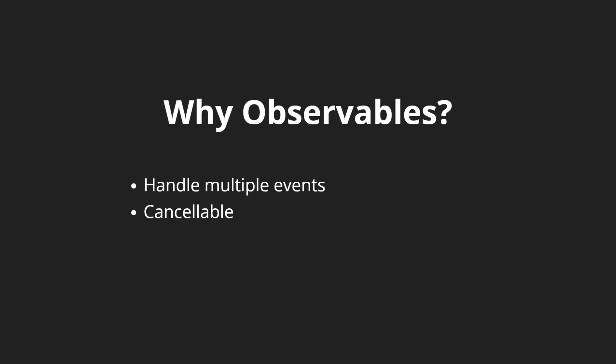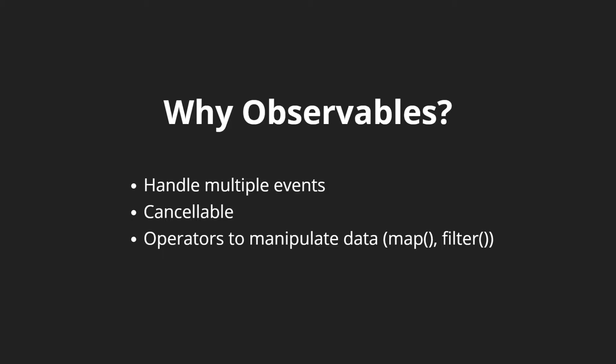A really cool thing about observables is that we have operators to manipulate the data. We can treat asynchronous data like collections — we can map, we can filter, and we'll use map extensively in our application. Another really cool thing is that if an observable makes a call and it doesn't go through, we can tell it to retry that call maybe three or four times, however many times we'd like. We can also replay a call so that we can take an HTTP call and replay it. This is really taking how we deal with asynchronous calls to the next level — we can delete calls, manipulate data when we get it, and even retry calls.